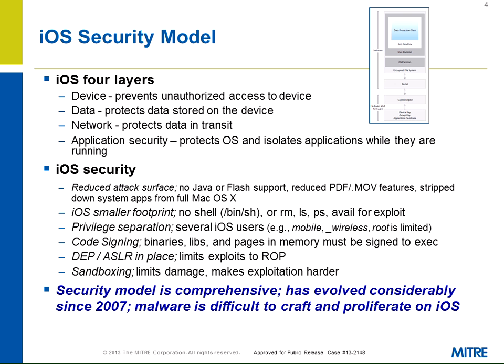Let me give you a little bit of background on iOS security. In general, you could say that it has four layers: the device, data, network, and application layers. Inside iOS security, they've actually done a really good job over the years — it has gotten better. Just looking at the OS itself, they've reduced the attack surface as much as possible by not having Java or Flash. They've stripped down a lot of their system apps compared to those same apps running on full-blown Mac OS X.